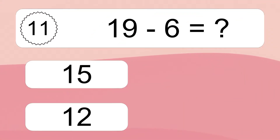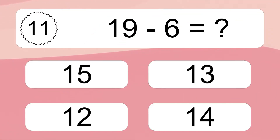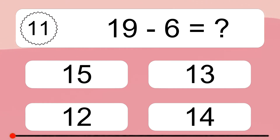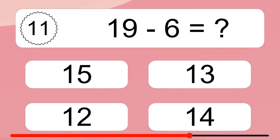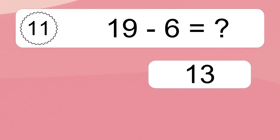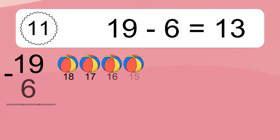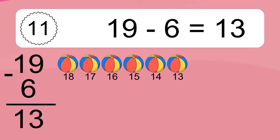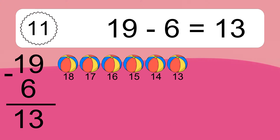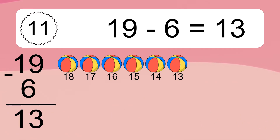19 minus 6 equals what? 19 minus 6 equals 13. Let's count it: 18, 17, 16, 15, 14, 13.